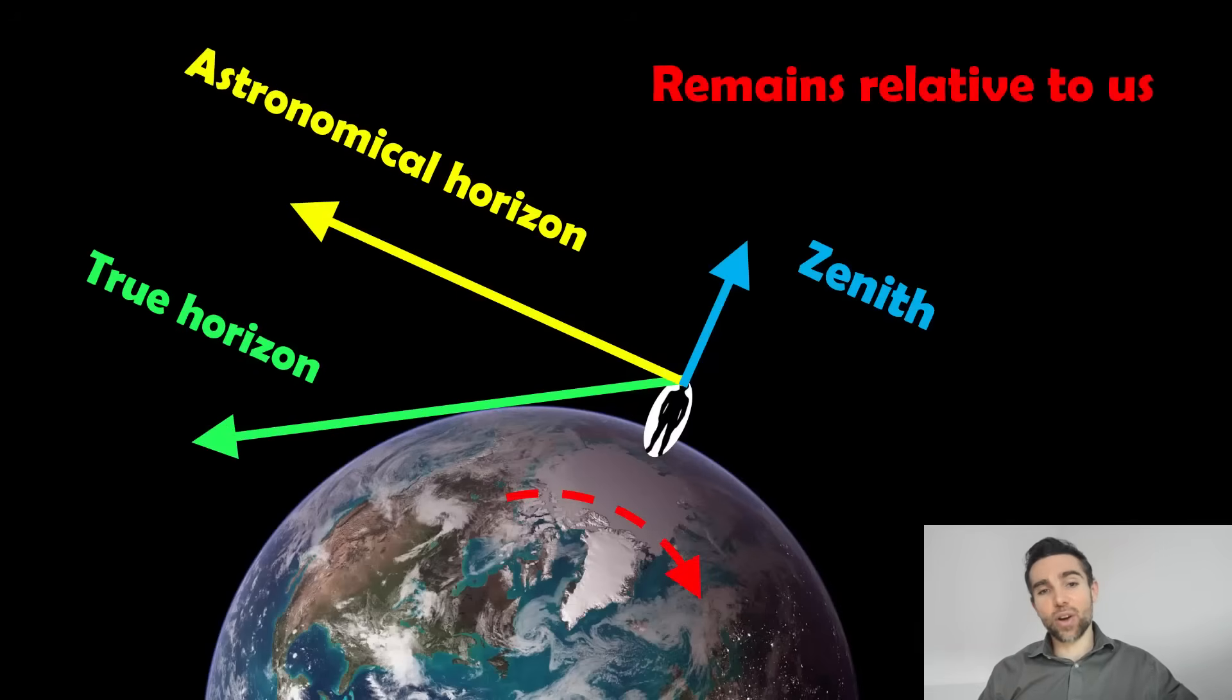Now, as the Earth moves and rotates through space, that zenith is always going to remain relative to us. It remains the same. So if we rotate the Earth around, we're still looking directly above us when we're on the surface of the Earth. The zenith will still be directly above us, it's relative to us.